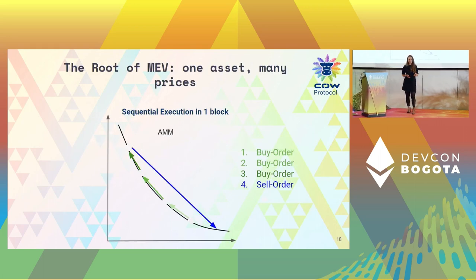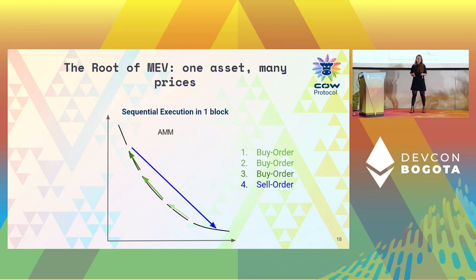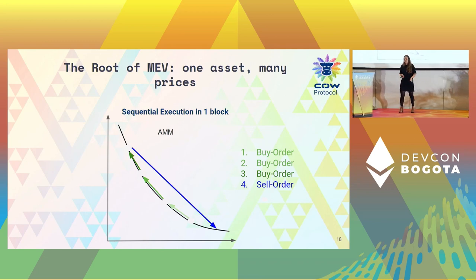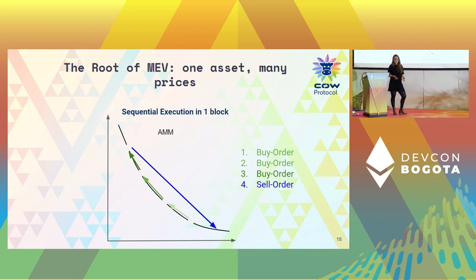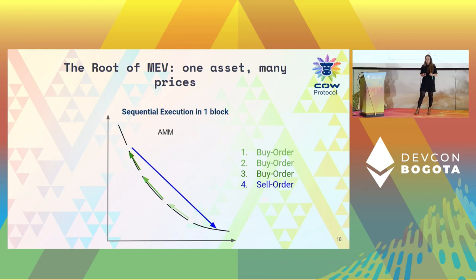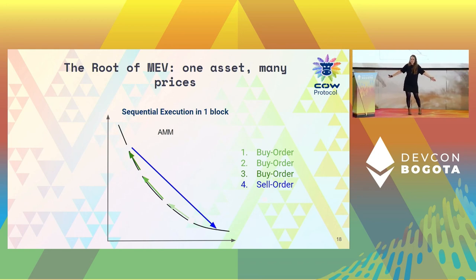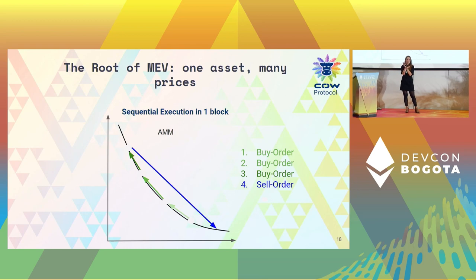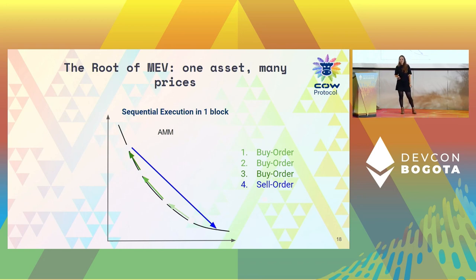We believe the main reason MEV exists today is that within a single Ethereum block you have multiple different token prices for a single individual asset. For example in decentralized trading, you can have a block where five people all want to sell USDC — they all interact with the same AMM but each gets a different price within a single block. One person interacts, moves the price; the next person interacts, moves the price again.